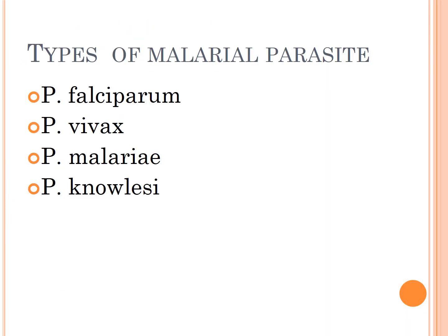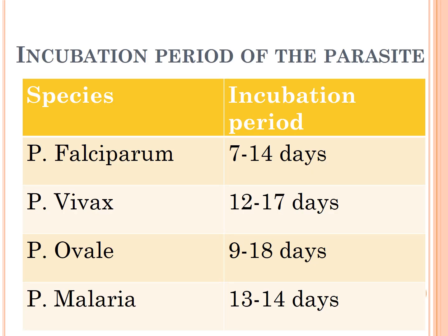Types of malaria parasites include P. falciparum, P. vivax, P. malariae, and P. ovale. Each species has its own incubation period.